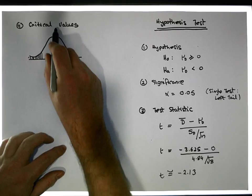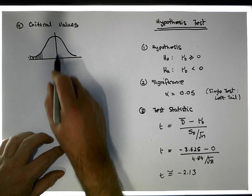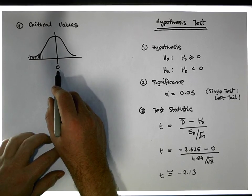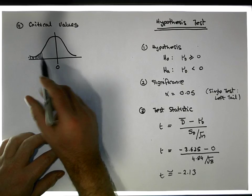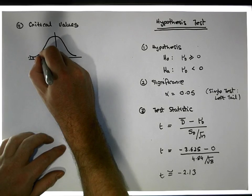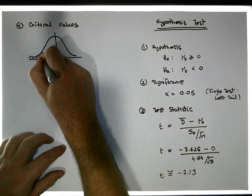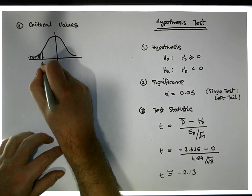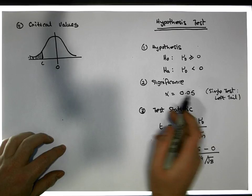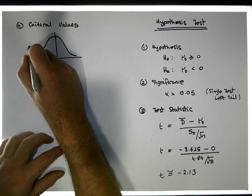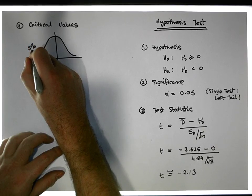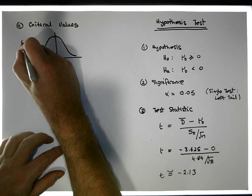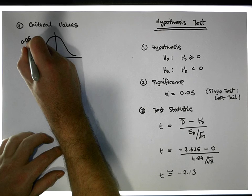From where it would be under the null position, and more importantly it's in the negative region. The question now is what is this critical value here, but we're putting all of the area — five percent of the area — into this particular tail, which is 0.05 of our area.